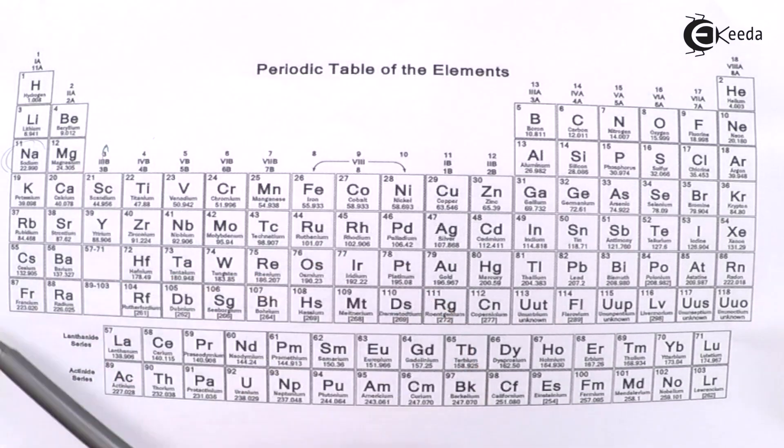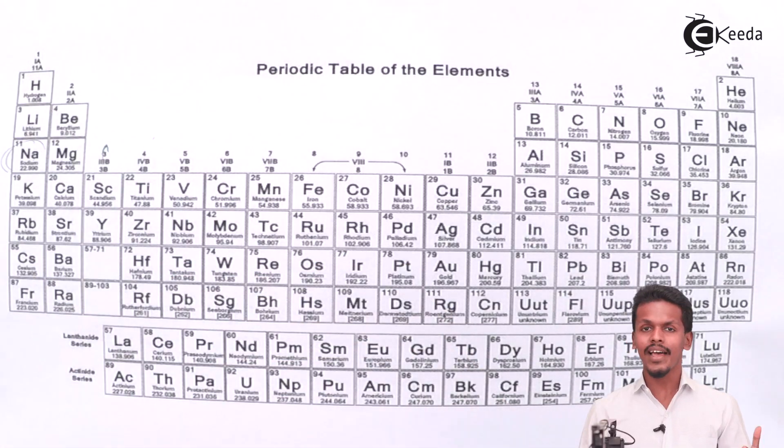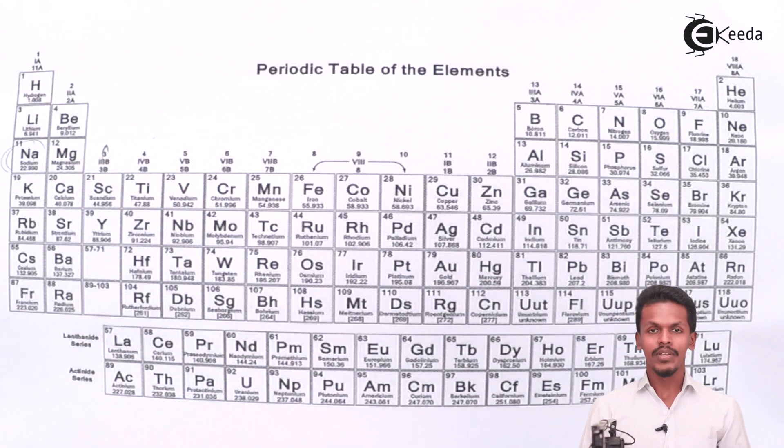As you could see, suppose if I am talking about S block elements, then S block elements are containing those elements which will contain almost the same kind of chemical property, but that is also applicable for P block, D block, and F block.